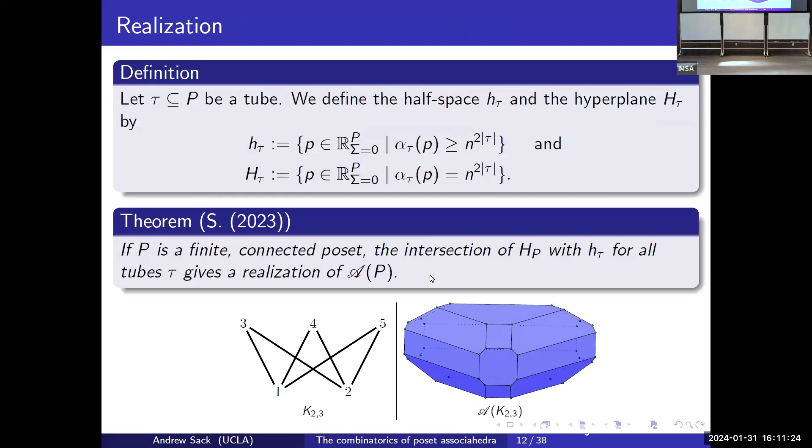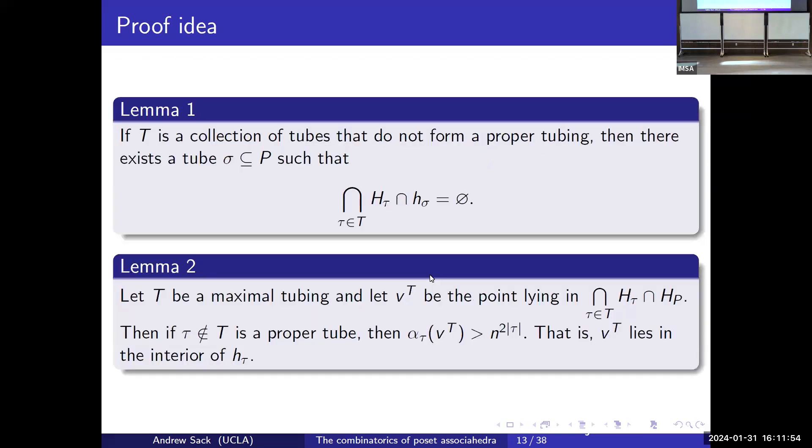Now we're able to realize poset associahedra. Here we have an intersection of half spaces where our half spaces are where this alpha overall over all tubes is greater than or equal to C times two to the power of that tube size. What we're really doing here is we're replacing this concept on the previous slide of infinitesimally close and infinitesimally closer, which in my head is a little hand-wavy, with exponentially close and exponentially closer. Because for a tube of a given size, a smaller tube has coordinates inside that are exponentially closer together inside of that tube.